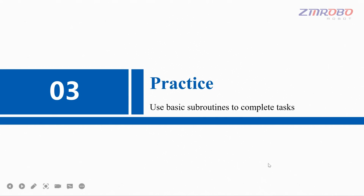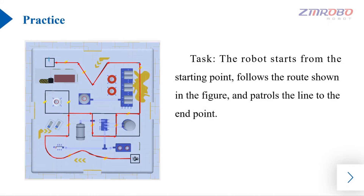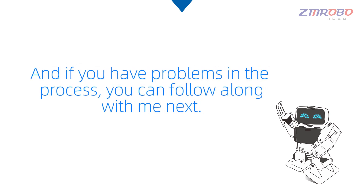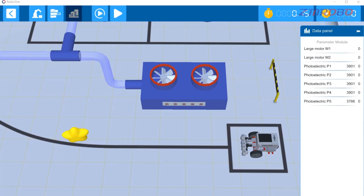Next we are going to use basic subroutines to complete the class exercise. The task of the exercise is to have the robot start from the starting point and follow the route shown to the end of the line. You can first try to complete the class exercises on your own, and if you have problems in the process, you can follow along with me. The first step is to get the robot out of the starting area.